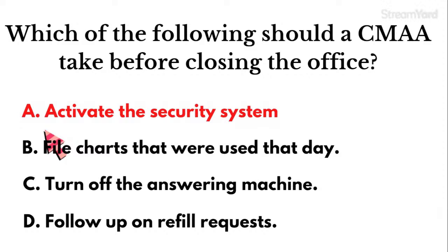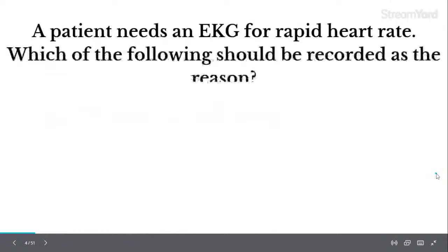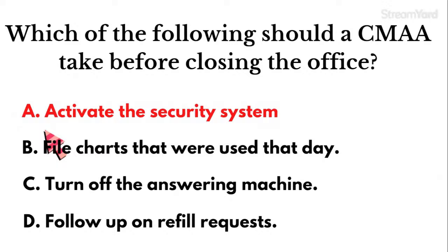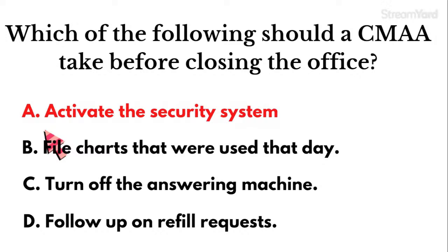The correct answer is to activate the security system. When looking at these questions, always eliminate options you know are wrong first. Since the question is about closing the office, we can rule out C and D immediately — we're not turning off the answering machine (if anything, we're turning it on), and we're not following up on refill requests as we're trying to leave. It came down to A and B, and activating the security system is what we absolutely must do right before closing.